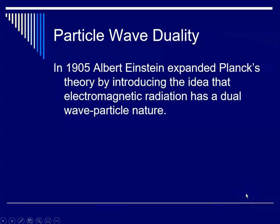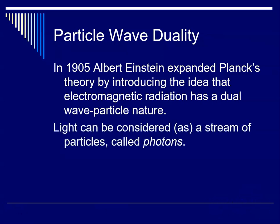So the particle wave duality is, I mentioned earlier, that people were trying to figure out whether light was made up of particles or waves. So in 1905, Albert Einstein expanded on Planck's theory by introducing the idea that electromagnetic radiation has a dual wave-particle nature. So it's a wave and it's a particle. So particle wave duality. So light can be considered as a stream of particles, and we call the particles photons.